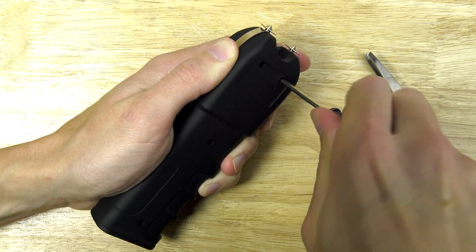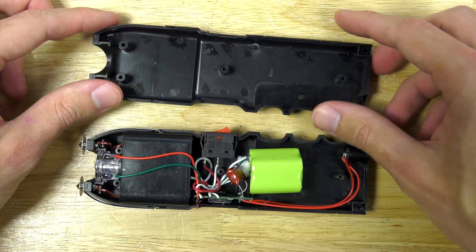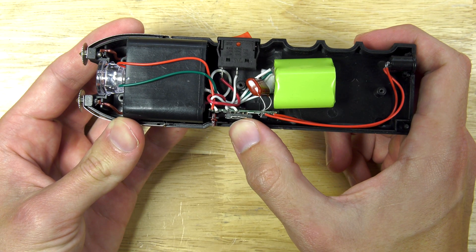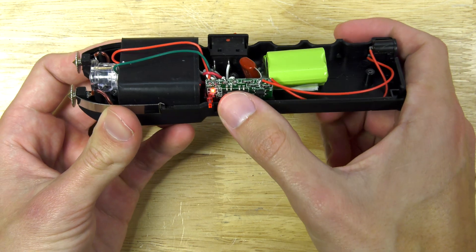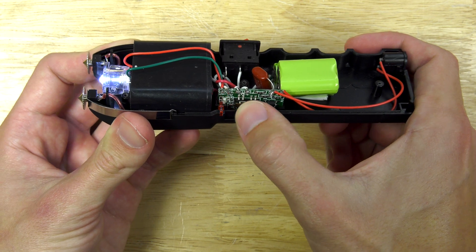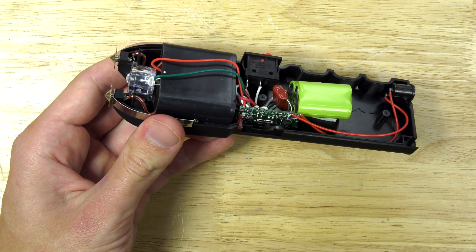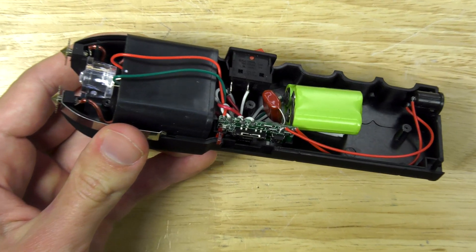Now each taser has a three position switch. First position is off, middle position is safety with the red light coming on to warn you that it's getting ready to be armed, and the final upright position is the taser position.